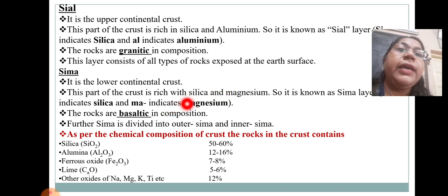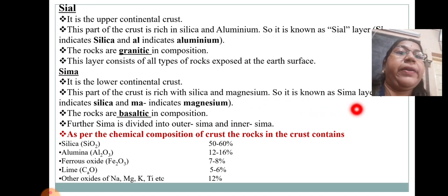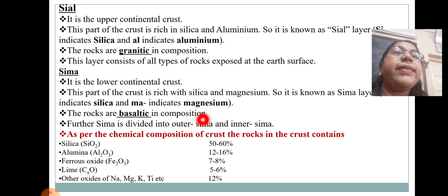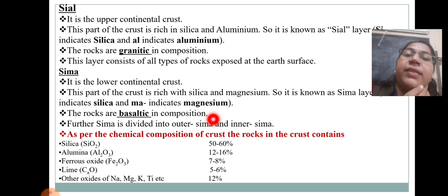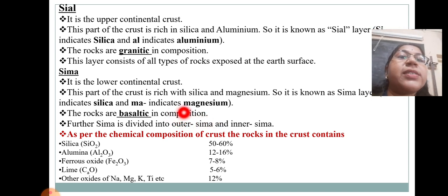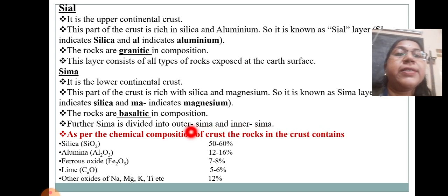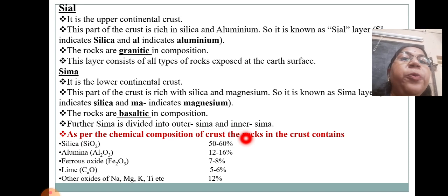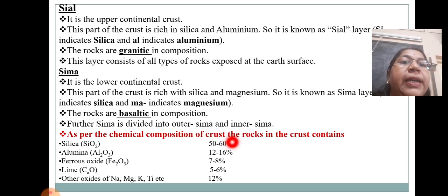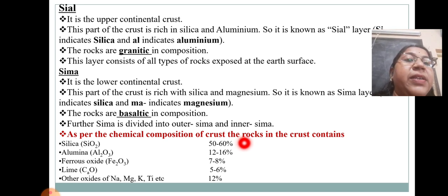Sima is the lower continental crust, rich in silica (Si) and magnesium (Ma). The rocks are basaltic in composition. Sima is further divided into outer Sima and inner Sima. The chemical composition of the crust includes silica (SiO₂) 50–60%, alumina (Al₂O₃) 12–16%, ferrous oxide (Fe₂O₃) 7–8%, lime (CaO) 5–6%, and other oxides of sodium, magnesium, potassium, and titanium approximately 12%.